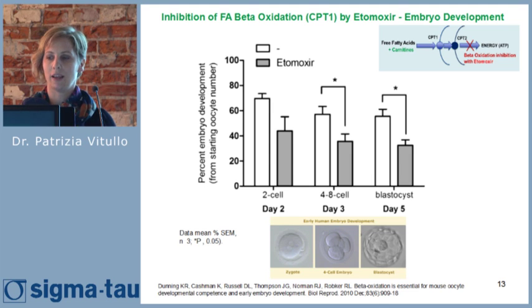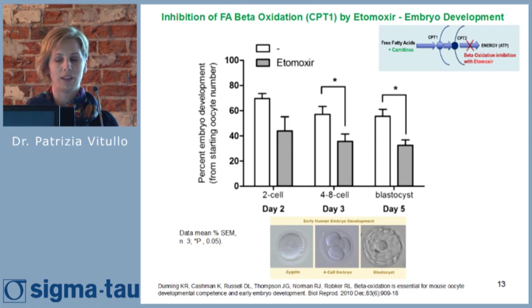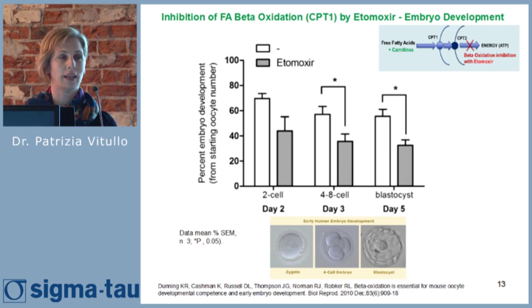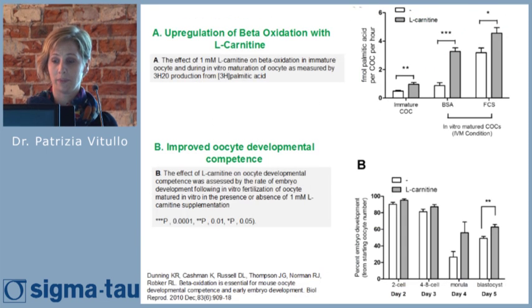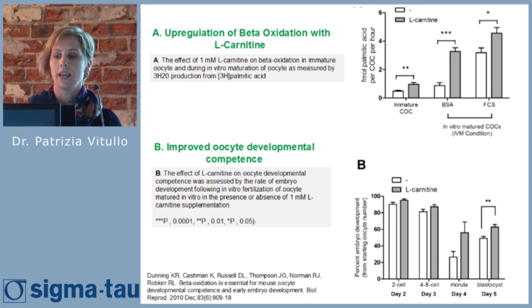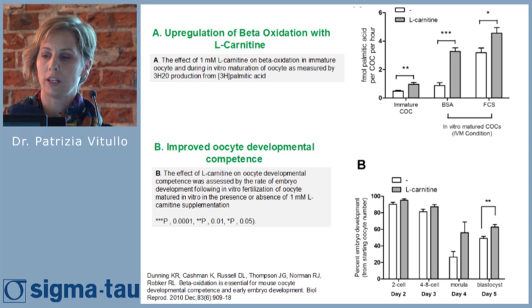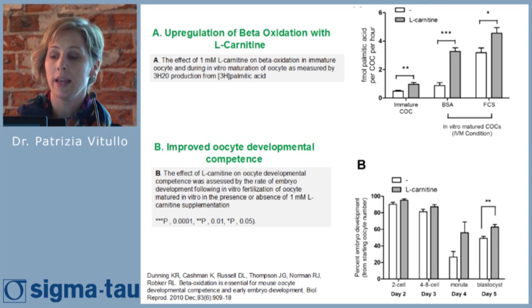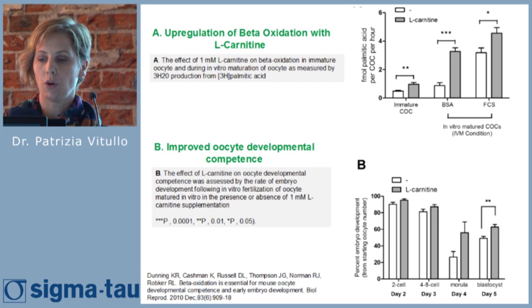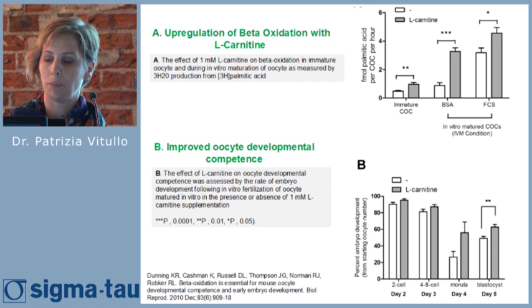The literature provides a large number of papers demonstrating the role of carnitines and beta-oxidation in embryo development. The authors show that inhibition of the beta-oxidation reaction with etomoxir gives a decrease in the percentage of embryo development. In graph A, the role of carnitine in improving oocyte maturation in vitro with serum is shown, and in graph B, the role of carnitine in improving embryo development is shown.